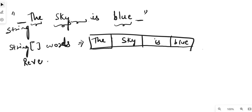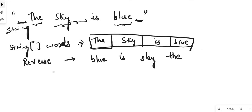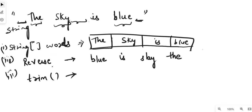Next step, we'll use a reverse loop to reverse the array, giving us 'blue is sky the'. We also need to remove the trailing or leading spaces using the trim function in Java. We need these three steps after converting the string to a string array. To store the reversed result, we'll use StringBuilder — a class in Java used to create mutable strings, useful when you want to modify a string without creating a new object.